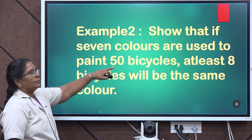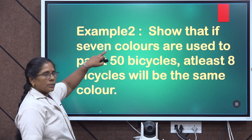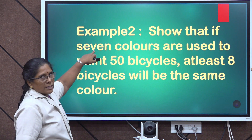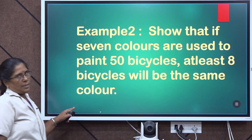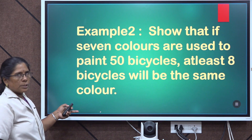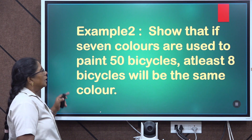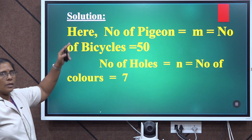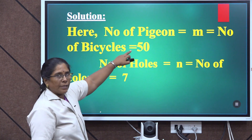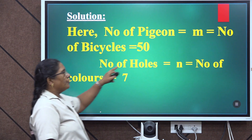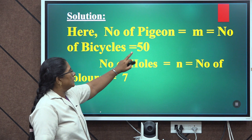The second problem: if 7 colors are used to paint 50 bicycles, show that at least 8 bicycles will be of the same color. Here the larger data is 50 bicycles, which should be considered as number of pigeons, M. The smaller data is number of colors, which is 7, considered as number of holes, N. So M equals 50 and N equals 7.